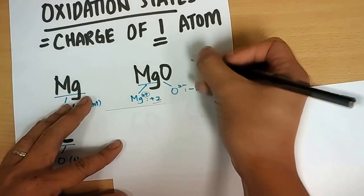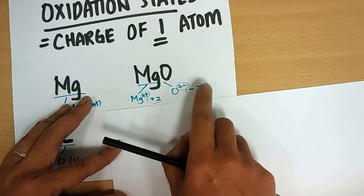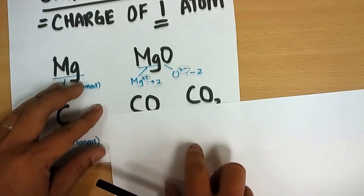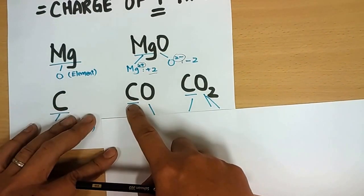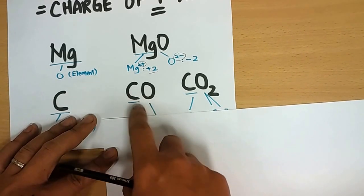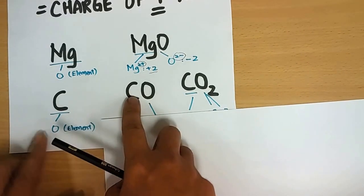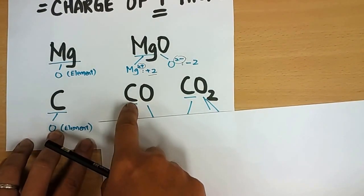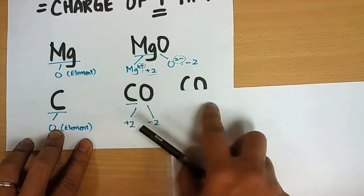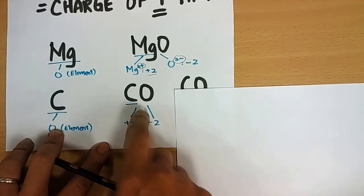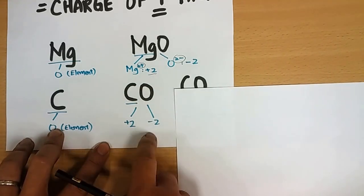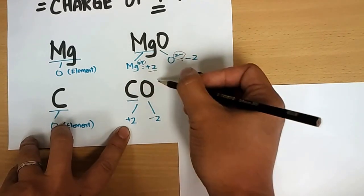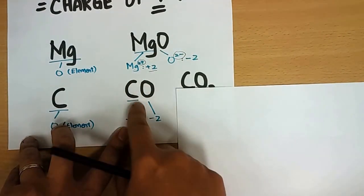Oxygen in magnesium oxide is an oxide ion O²⁻, so the oxidation state of oxygen in magnesium oxide is minus two. For carbon in a covalent compound, they still have oxidation states. Carbon was zero as a pure element, but now how do we find the carbon's oxidation state? Refer to the periodic table — oxygen is in group six, so it has a charge of minus two. The overall compound is neutral, so the charges must cancel to zero, meaning carbon must be plus two.